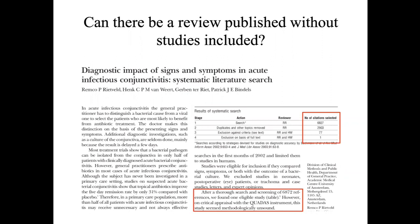Eva asks: can we still call it a review, or is it just a literature search yielding no true results? Well, I suppose the correct description is that the literature search did not yield any result. But in order to get to this stage, you had to go through the first two steps of a systematic review.